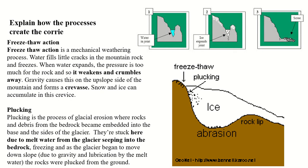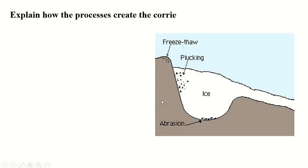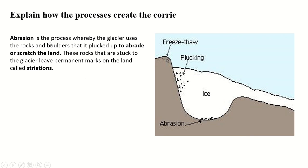Plucking is our next process. Once snow and ice have built up and formed a glacier, plucking occurs — this is the process of glacial erosion where rocks and debris from the bedrock become embedded in the base and sides of the glacier. Meltwater seeps into cracks, expands when it freezes, breaks off bits of rock, and those bits get stuck into the glacier. As the glacier moves down the mountain, plucking enlarges the crevice.